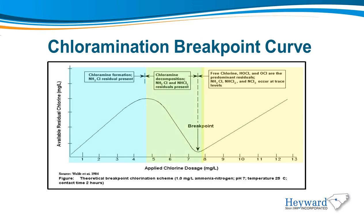This continues until all of the free ammonia is consumed, which happens at approximately a 5-to-1 weight ratio. As additional chlorine is dosed, it begins to decompose the monochloramine into dichloramine and trichloramine until, eventually, the breakpoint is reached. Any additional chlorine that is added remains in the form of free chlorine, and eventually the ammonia is broken down and the nitrogen is released as nitrogen gas.